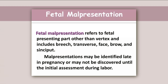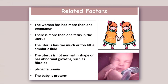Fetal malpresentation refers to a fetal presenting part other than vertex, and includes breech, transverse, face, brow, and sinciput. Malpresentation may be identified late in pregnancy or may not be discovered until the initial assessment during labor. Related factors include: the woman has had more than one pregnancy; more than one fetus in the uterus; too much or too little amniotic fluid; abnormal uterine shape or abnormal growth such as fibroids; placenta previa; and preterm baby.